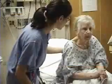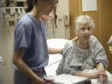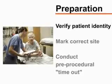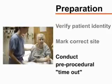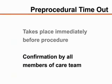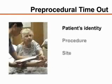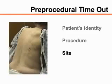Explain the procedure to the patient and obtain written informed consent. You should also verify the patient's identity, mark the correct site, and conduct a preprocedural timeout. The timeout, which takes place immediately before the procedure is started, consists of confirmation by all members of the care team that the patient's identity, the procedure he or she is to undergo, and the site of the procedure are all correct.